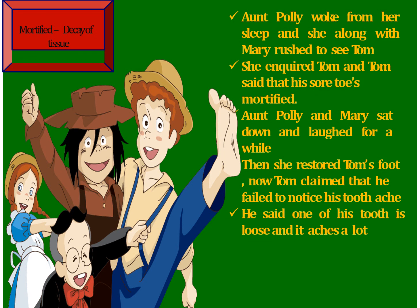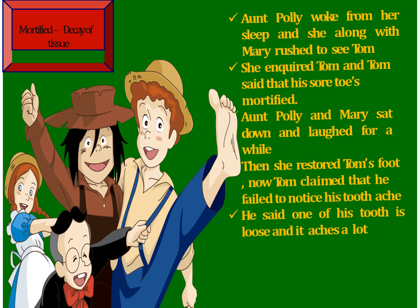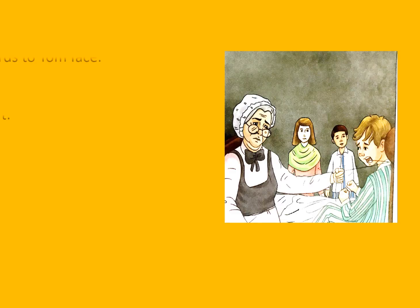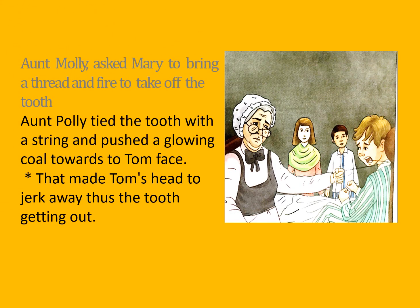She inquired what the matter was. Tom replied that his sore toe was mortified. Aunt Polly and Mary sat down and laughed for a while, then she inspected Tom's foot. Tom claimed that he failed to notice his tooth ache — he said one of his teeth was loose and it ached a lot. Aunt Polly then realized that Tom was trying to fool her with the loose tooth story after he had said his toe was mortified.